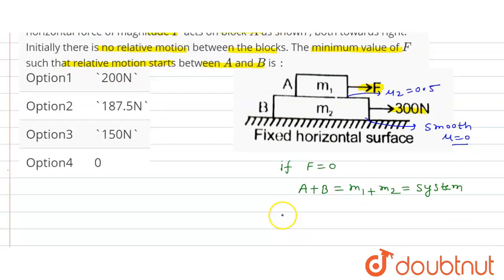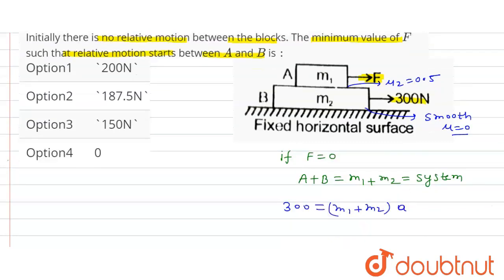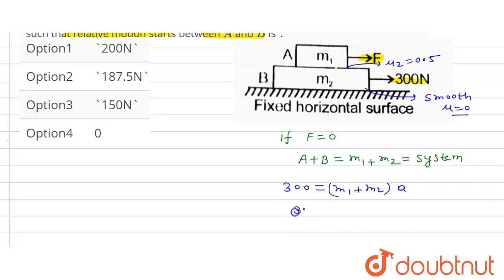Here net force is 300 equals mass m1 plus m2 into acceleration a. So 300 is equal to 10 plus 5 into acceleration a. From here acceleration a is equal to 20 meter per second square.